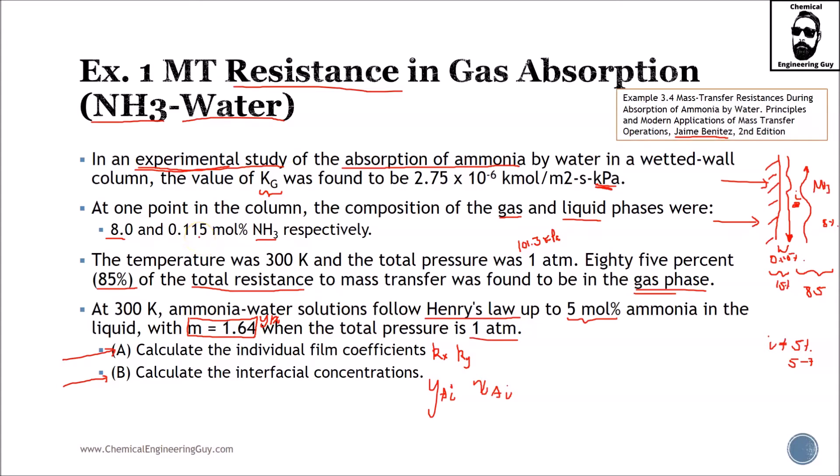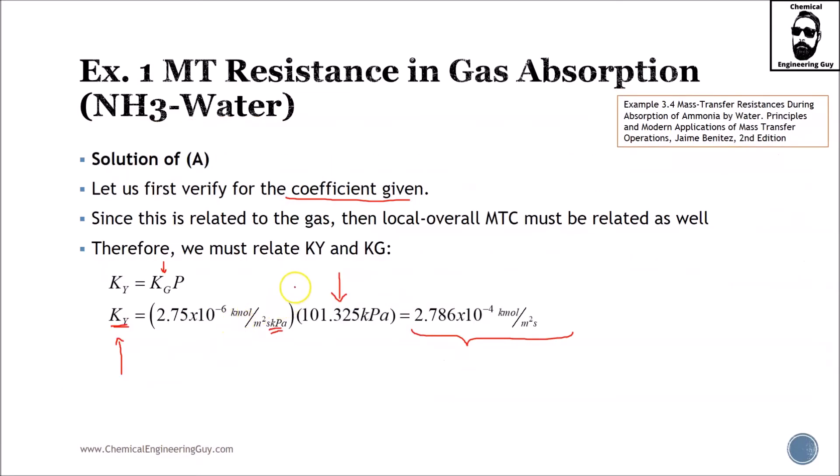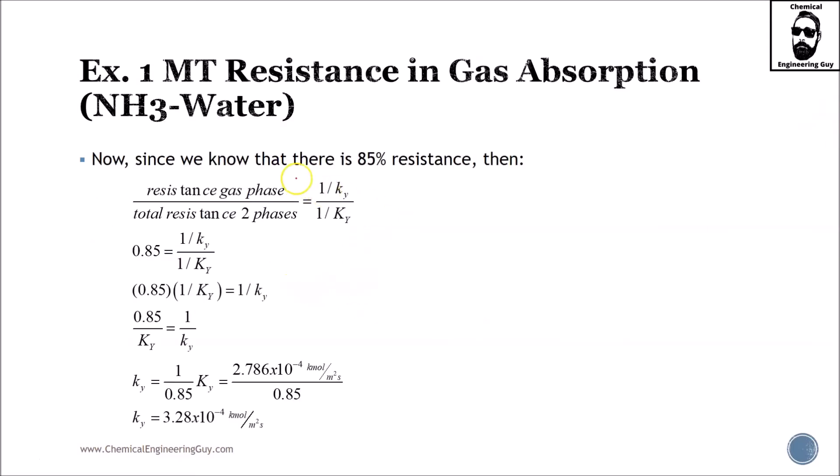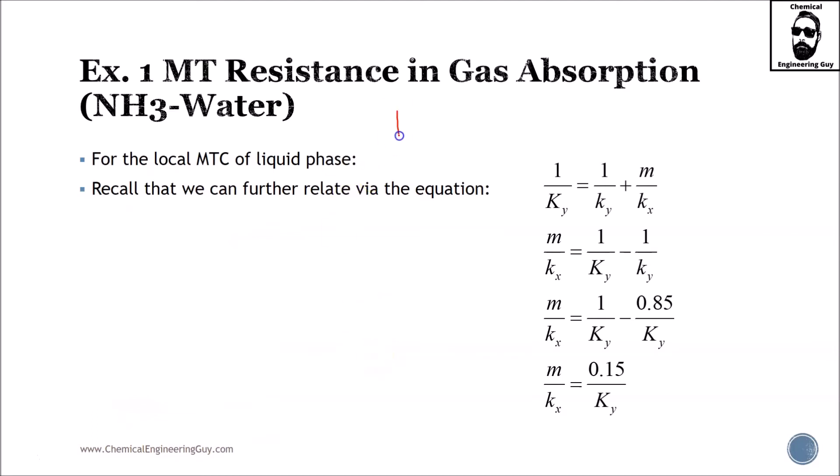Resistance of the gas phase should be divided by the total resistance of the two phases. This is what we saw previously. What I'm going to assume is that this is the 85 for the gas phase. So this is local, this is overall, and I can easily calculate the local mass transfer coefficient. I solve for ky lowercase, substitute data and 85, and of course you should expect a little bit higher value here.